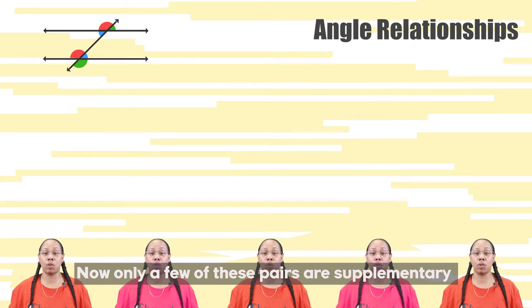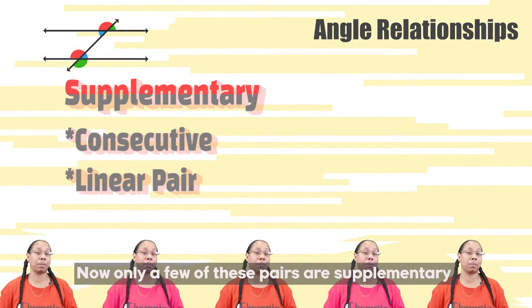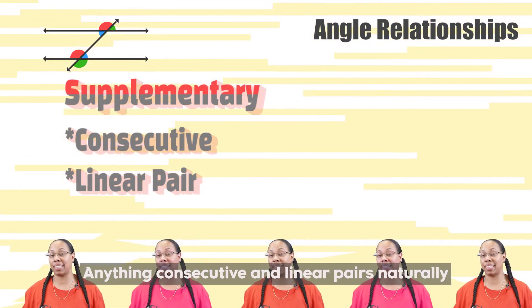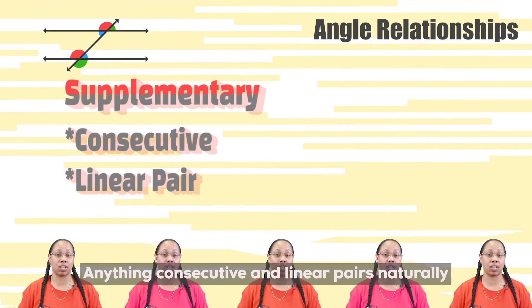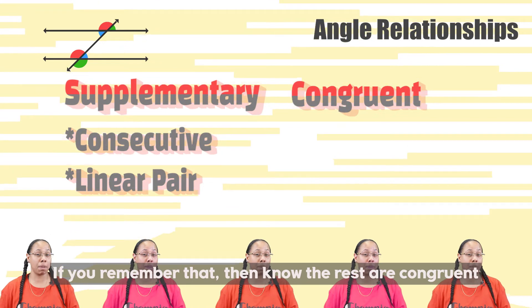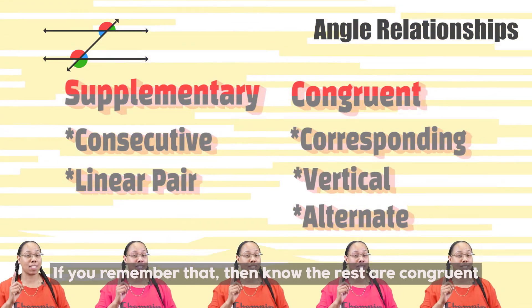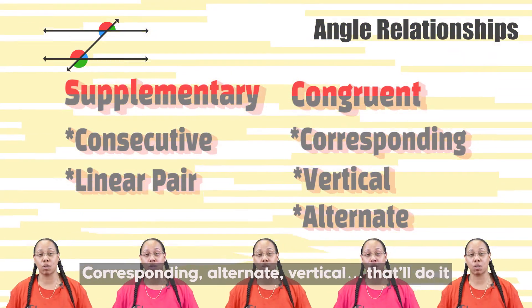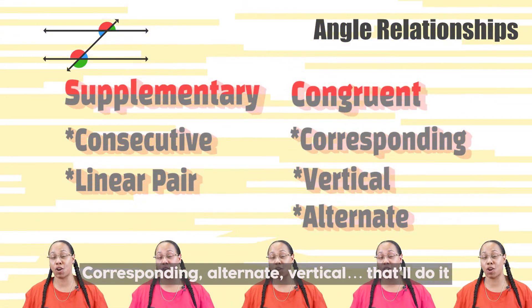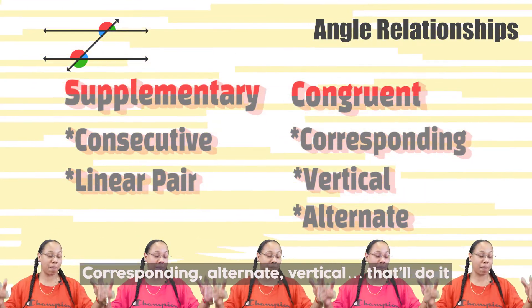Now only a few of these pairs are supplementary — anything consecutive and linear pairs naturally. If you remember that, then know the rest are congruent: corresponding, alternate, vertical. That'll do it.